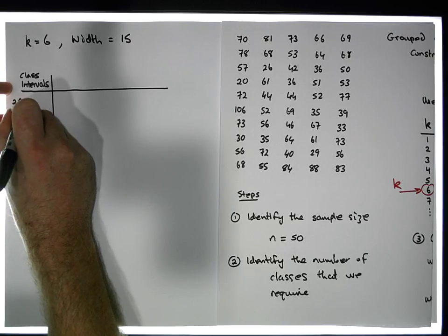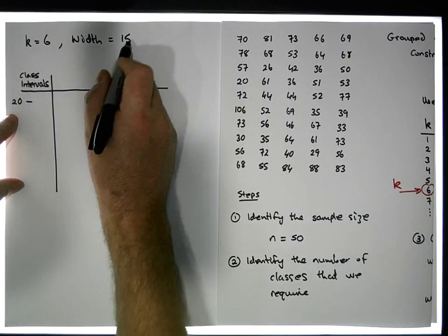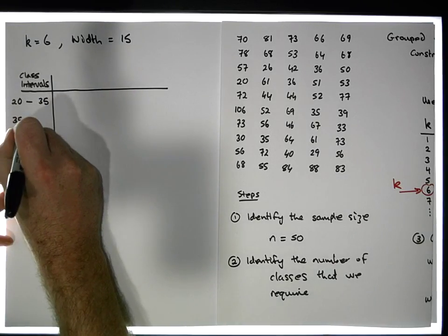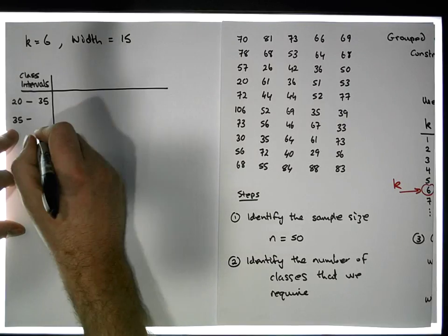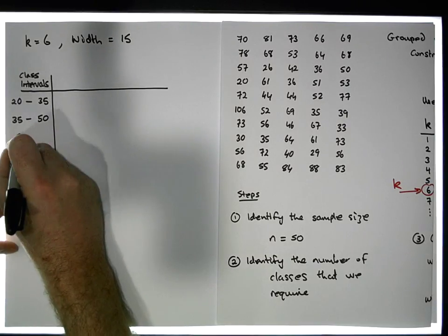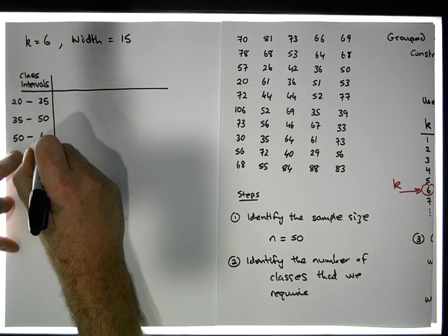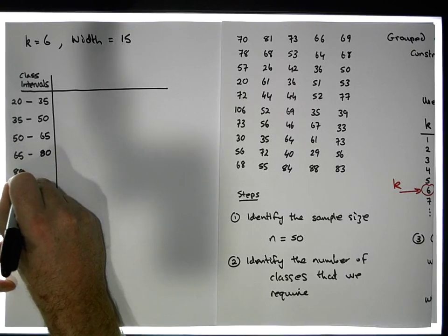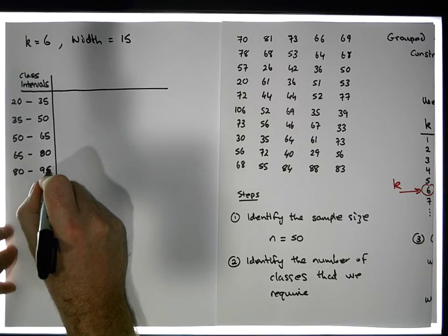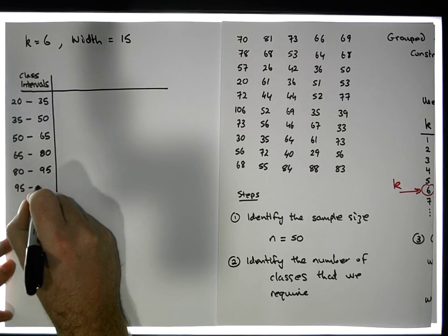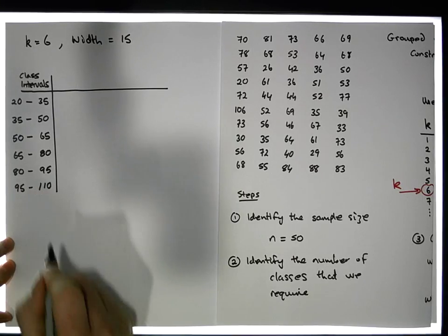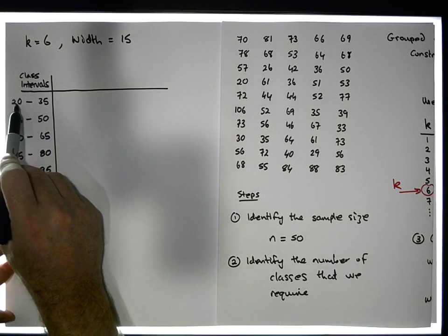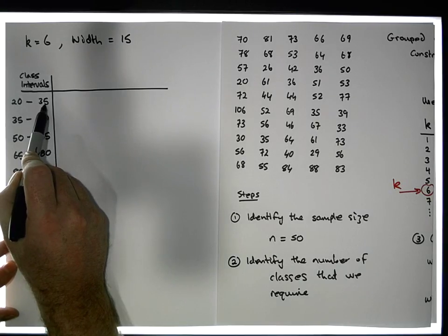Starting at 20, I add on the class width of 15 to get 35. Then 35 plus 15 gives 50. Then 50 plus 15 gives 65. Then 65 plus 15 gives 80. Then 80 plus 15 gives 95. And 95 plus 15 gives 110. The important thing to note is that the lower bounds of these classes are inclusive, while the upper bounds are exclusive. So when I count...